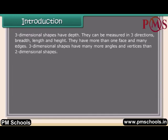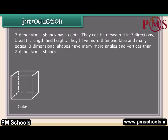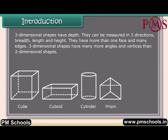Three-dimensional shapes have depth. They can be measured in three directions: breadth, length, and height. They have more than one face and many edges. Three-dimensional shapes have many more angles and vertices than two-dimensional shapes, such as cube, cuboid, cylinder, prism, pyramid, etc.